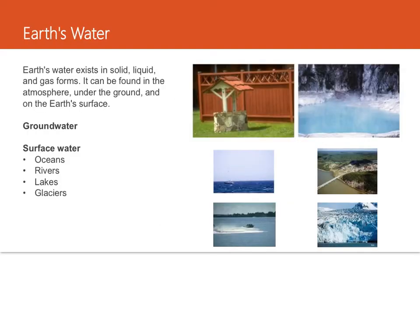So Earth's water exists in solid, liquid, and gas forms. It can be found in the atmosphere, under the ground, and on the Earth's surface. So about three-quarters, remember, three-fourths or 75% of the Earth's surface is covered in water. And Earth's liquid water collects underground in aquifers and on the surface in oceans, rivers, and lakes. So surface water can be found in the solid state, like snow or ice and glaciers.